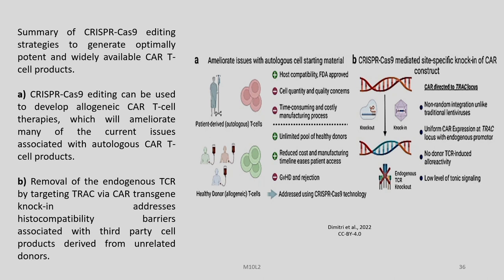The latter issues need to be addressed: an unlimited pool of healthy donors, reduced cost and manufacturing timeline will ease patient issues. GVHD and rejection should not occur. Healthy donor allogeneic T-cells will be addressed using CRISPR-Cas9 technology. Removal of the endogenous TCR by targeting the TRAC locus via CAR knock-in addresses histocompatibility barriers associated with third-party cell products derived from unrelated donors. Benefits include non-random integration, uniform CAR expression at TRAC locus with endogenous promoter, no donor TCR-induced allo-reactivity, and low levels of tonic signaling.